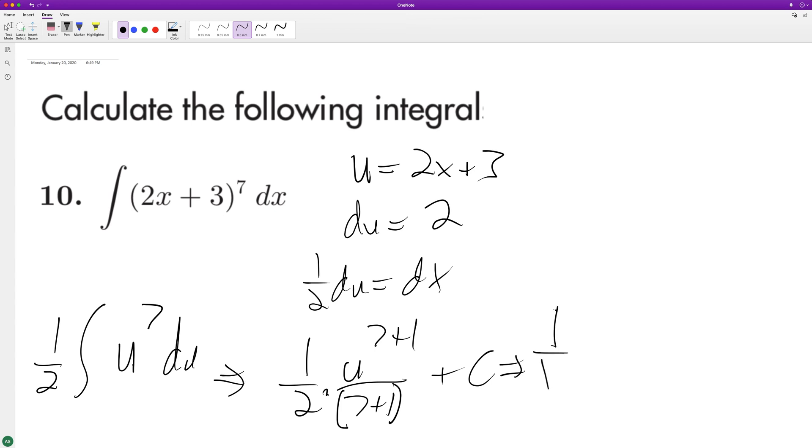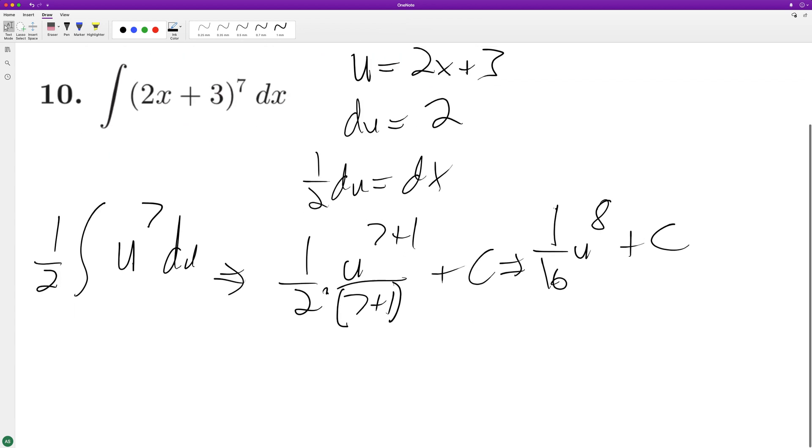One over 16 u raised to the eighth plus c. Let's go ahead and substitute back in for u. We'll have one-sixteenth, and our u is going to be 2x plus 3 raised to the eighth plus c.